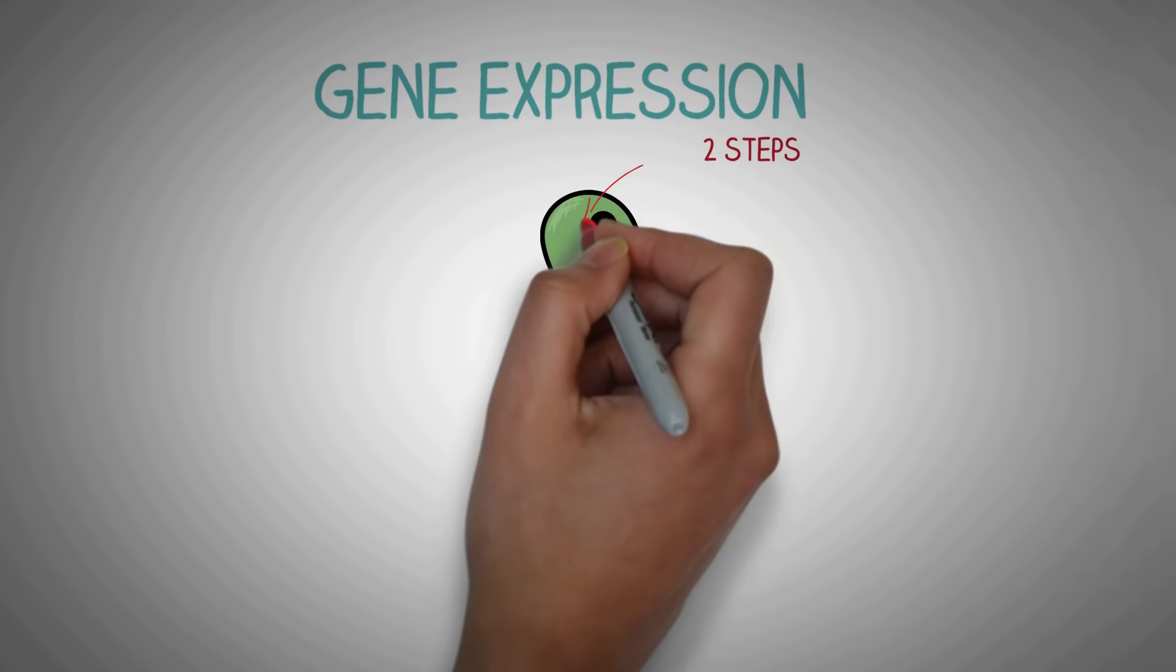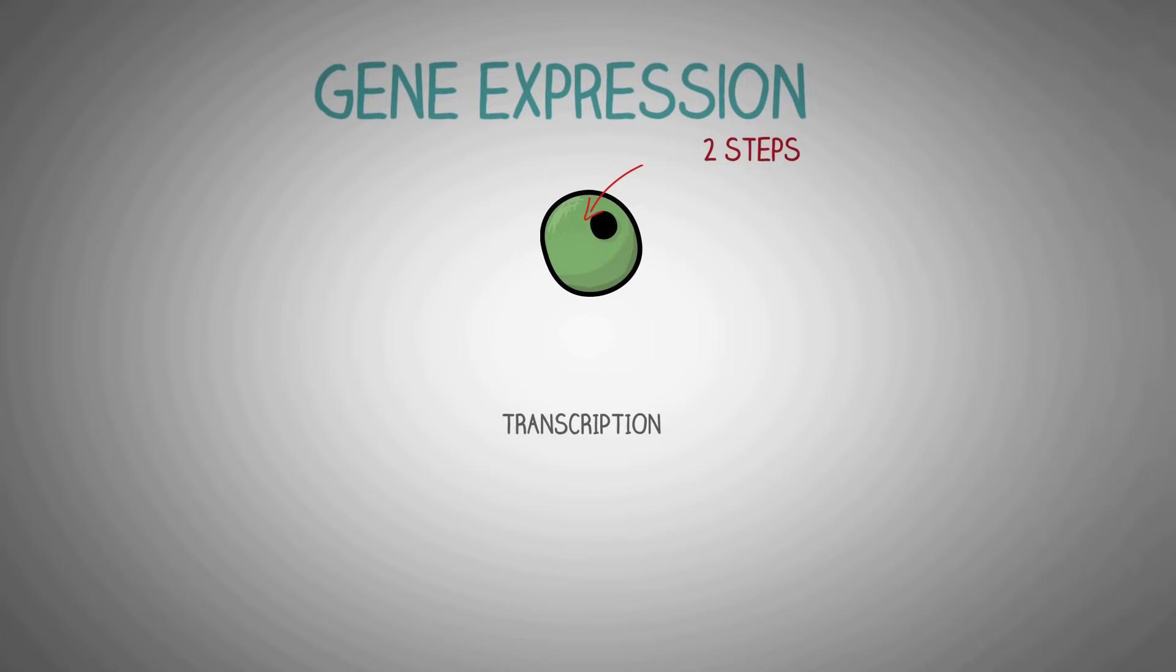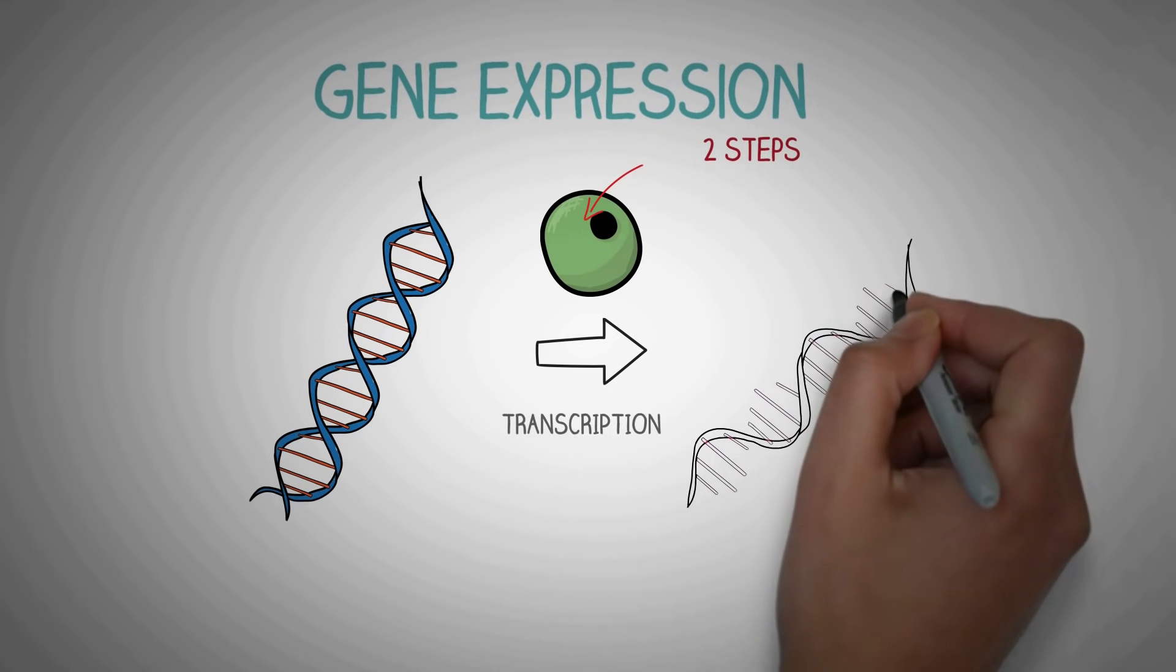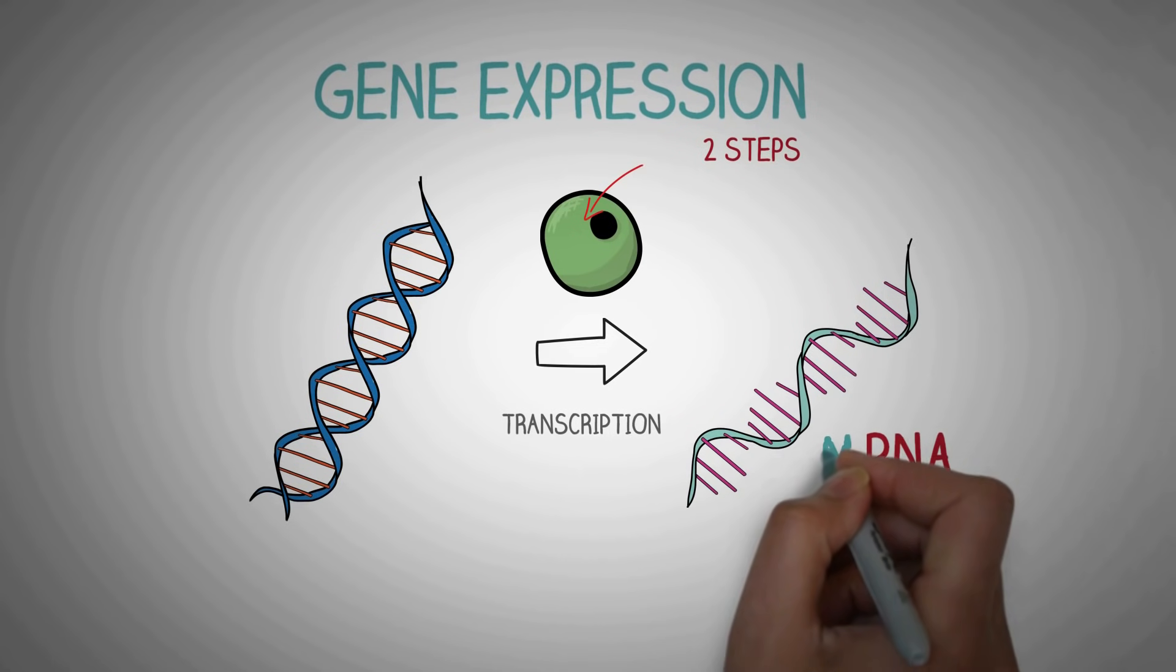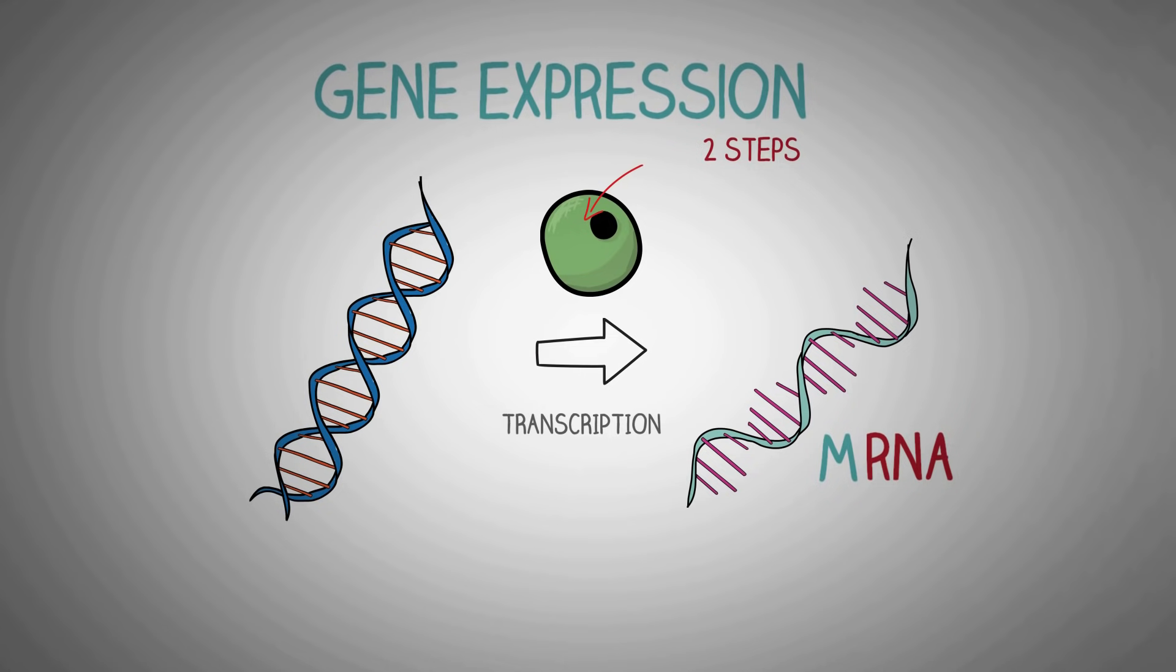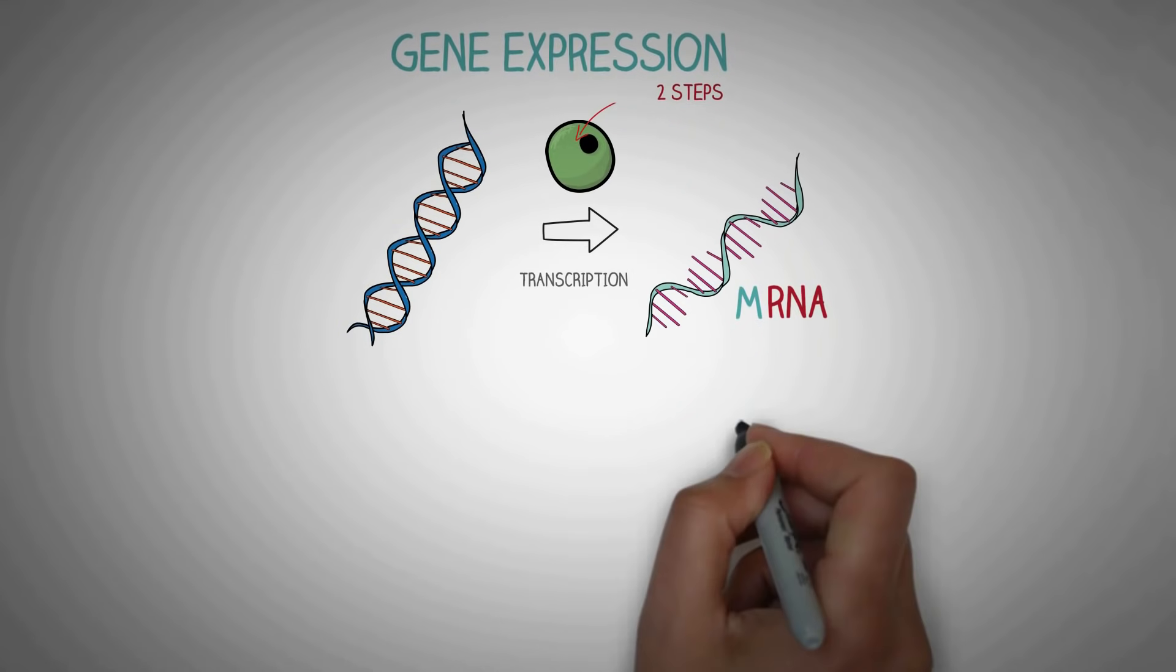It begins in the nucleus with the process of transcription in which the information on the DNA is copied into a RNA. This RNA is known as the messenger RNA or the mRNA since the main job of this RNA is to carry this information or message outside the nucleus and use it to perform the second step of gene expression known as translation.